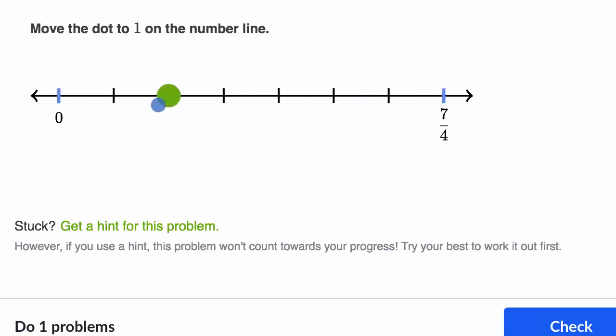Because then it would be one fourth, two fourths, three fourths, four fourths, five fourths, six fourths, and seven fourths. All right, we're making some good progress.